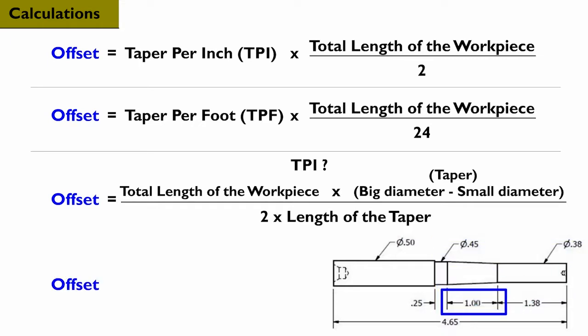For this example, our calculation for the offset is 4.65 multiplied by the difference of 0.45 minus 0.38 divided by 2 times 1.0. This makes our offset calculation 0.16275. Because the part's tolerance needs to be given to two places, we can round the offset amount to 0.16.